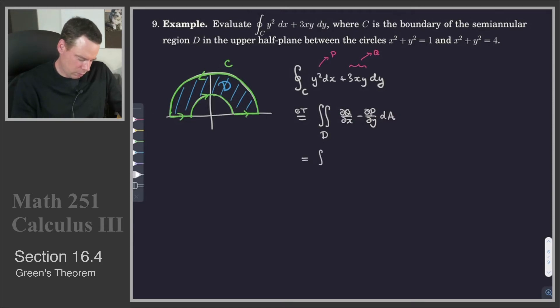Well, we need to know what dQ/dx minus dP/dy is. So dQ/dx is 3y minus dP/dy is 2y dA. So in other words, we are integrating over the region D of y dA. So there's our double integral we want to compute.